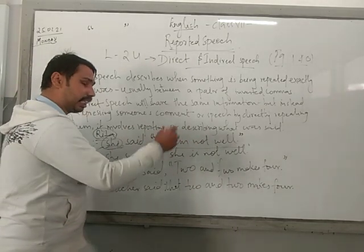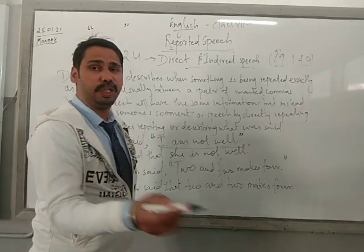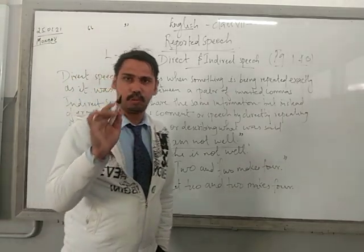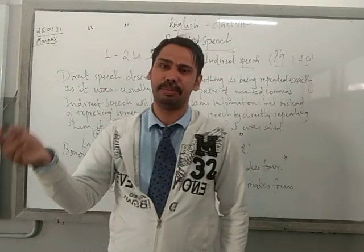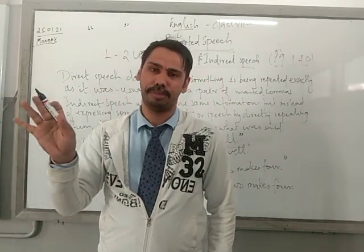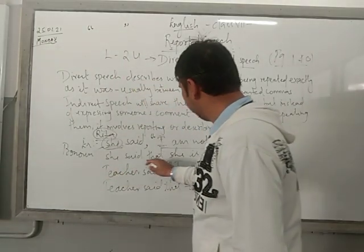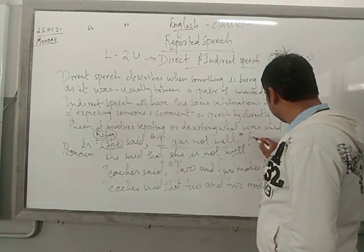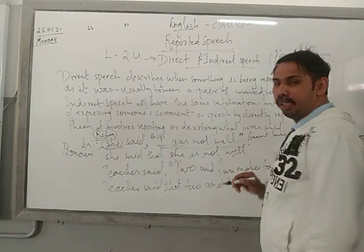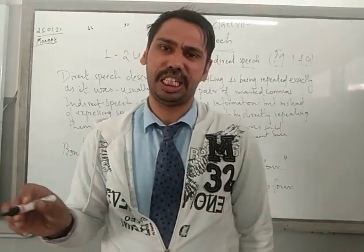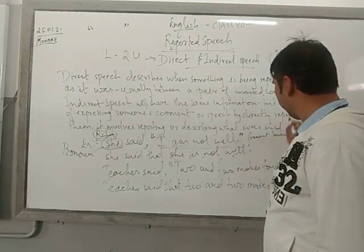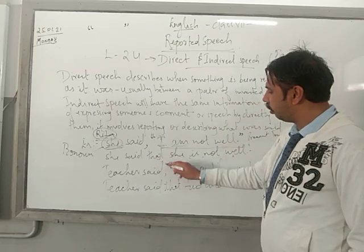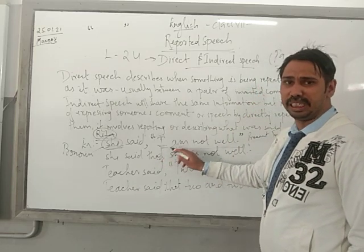This is the statement of the speaker, written within the inverted commas. When we report this statement into indirect speech, we remove the commas — that is very important. When you report somebody's statement, you remove the inverted commas. So: she says she is not well. Remember, present tense and future tense statements don't change; they remain the same.